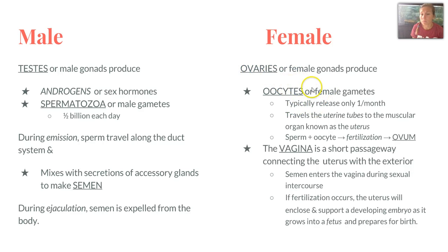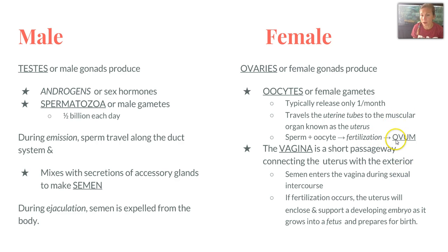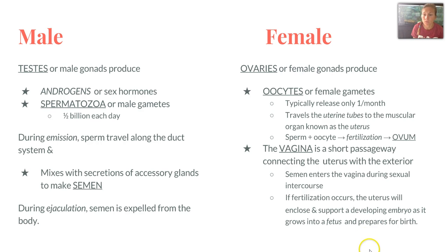Female gonads are the ovaries. They produce oocytes, or the female sex cells or gametes, and typically release only once per month. They travel the uterine tubes to the uterus. If sperm meets with the oocyte, that usually results in fertilization, resulting in an ovum. The vagina is a short passageway connecting the uterus with the exterior so semen can enter to help fertilization occur. If it does, the uterus will enclose and support a developing embryo as it grows into a fetus and prepares for birth.